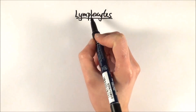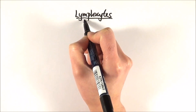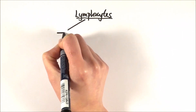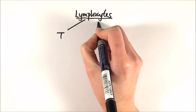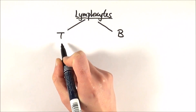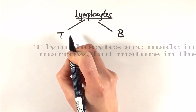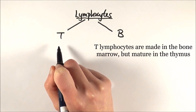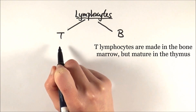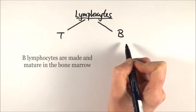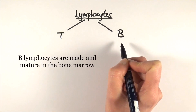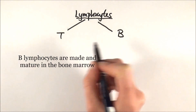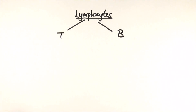First of all, we can group lymphocytes into two big groups: T lymphocytes and B lymphocytes. T stands for thymus, meaning the lymphocytes are made in the bone marrow but matured in the thymus, whereas B lymphocytes are made and matured in the bone marrow. That's the key difference between the two.